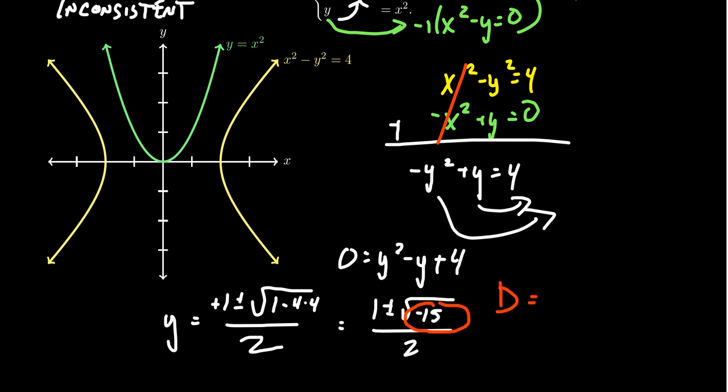Notice our discriminant turned out to be negative 15. That's less than 0. That tells us there are no real solutions. So there are no real numbers. There are no real numbers that will make this intersection happen.